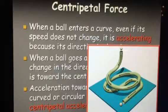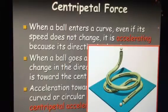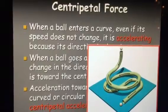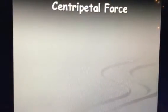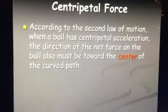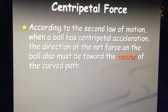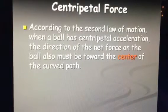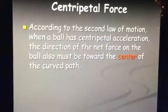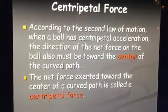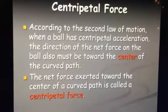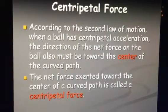If I take this bucket and swirl it around with water in it, the water doesn't fall out. We're actually having a force pushing from the center all the way to the back, holding the water in there so it doesn't fall out of the bucket — which is a neat concept. According to Newton's second law, when the ball has centrifugal acceleration, the direction of the net force on the ball must act towards the center of this curved path. The net force exerted towards the center of the curved path is called centrifugal force — that's why the water wouldn't fall out.